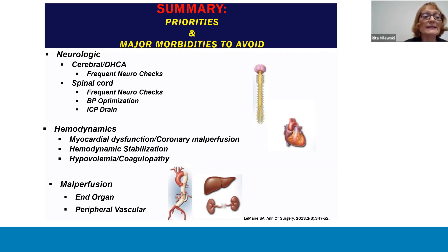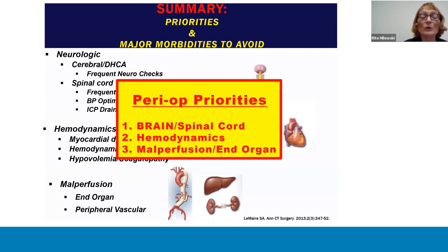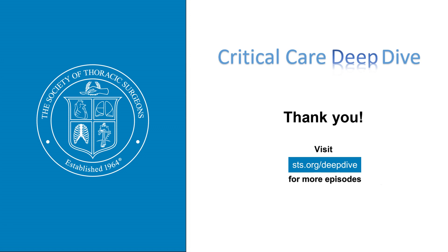Thus, utilizing the approach discussed in this session, the perioperative priorities of brain and spinal cord perfusion, hemodynamic stabilization, and minimization of end organ malperfusion can be accomplished in the perioperative period in the ICU for aortopathies and dissection. Thank you.